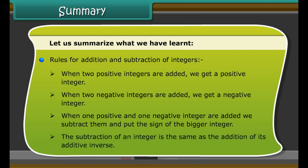Rules for addition and subtraction of integers: When two positive integers are added, we get a positive integer. When two negative integers are added, we get a negative integer. When one positive and one negative integer are added, we subtract them and put the sign of the bigger integer. The subtraction of an integer is the same as the addition of its additive inverse.